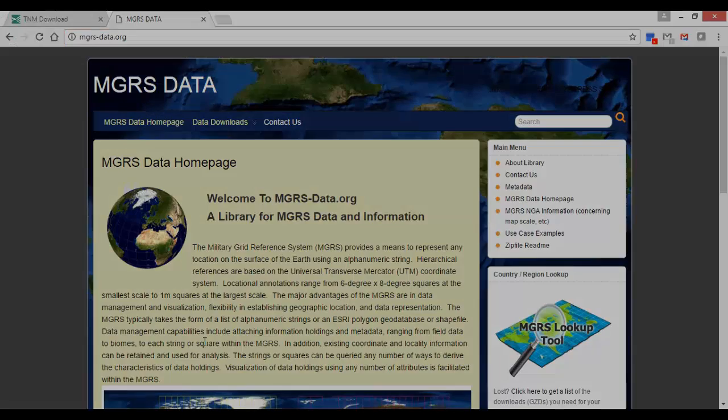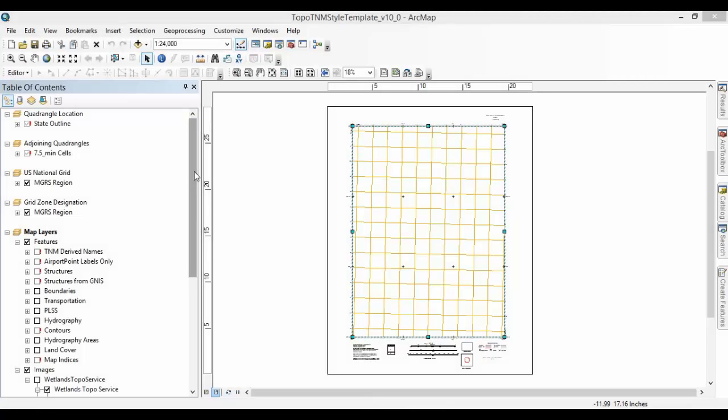The ancillary file geodatabase also contains a table with 7.5-minute map cell names. The adjoining quad names will be populated from this data table. Additionally, UTM zones and other information for use in tailoring the style template to a specific 7.5-minute map can be found within the ancillary file geodatabase.